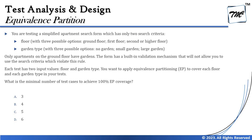Let's take the first sample example question to understand how a multiple-input question looks. The question says: you are testing a simplified apartment search form which has two search criteria. Number one is floor, and number two is garden type. The floor has three possible options: ground floor, first floor, and second or higher floor — where second or higher floor is the third category, meaning anything beyond that.